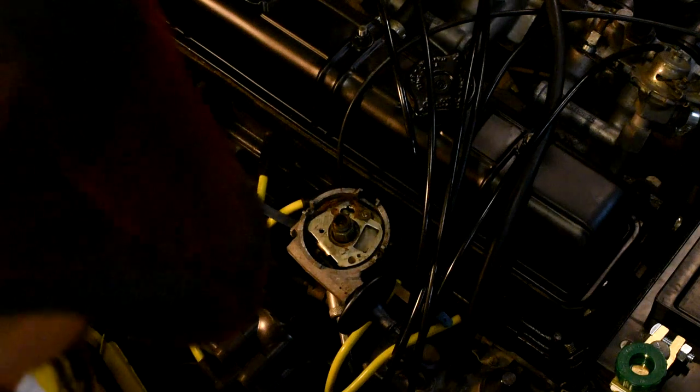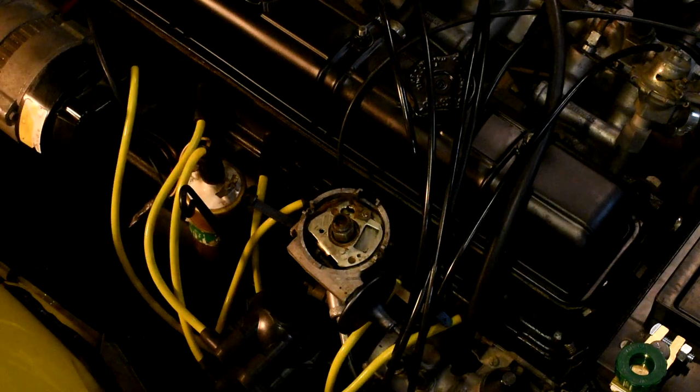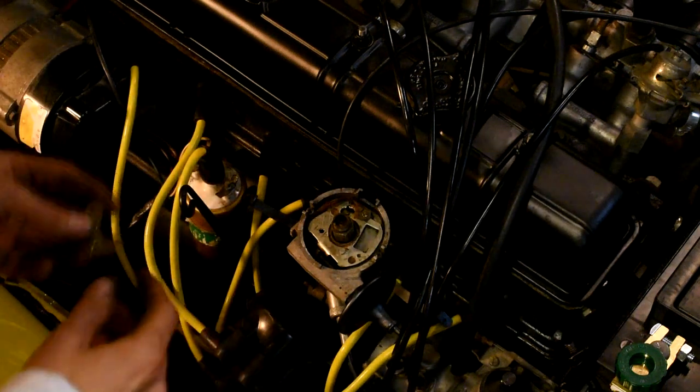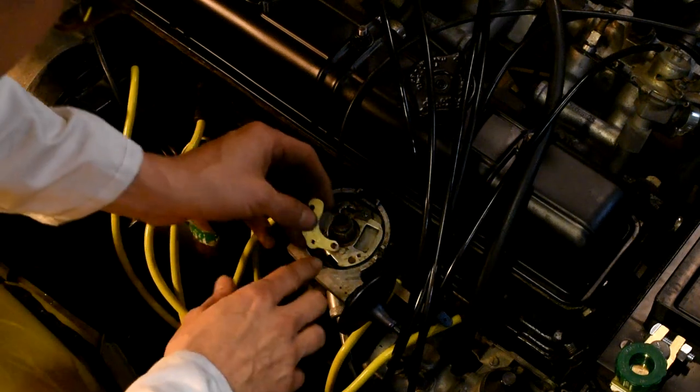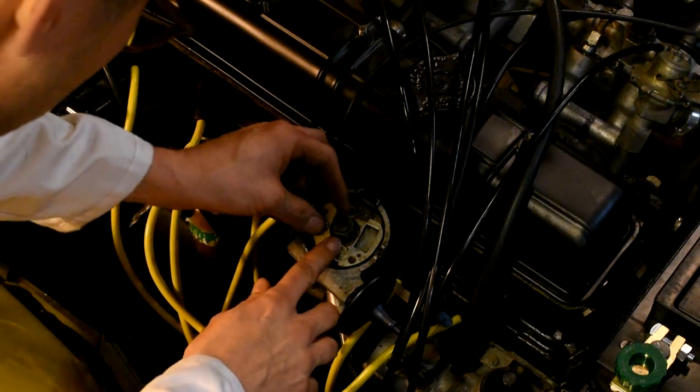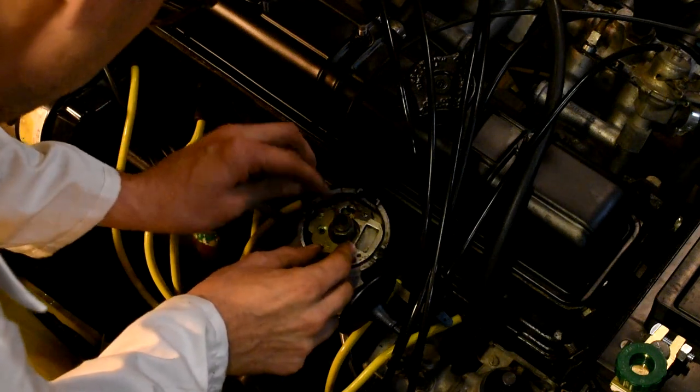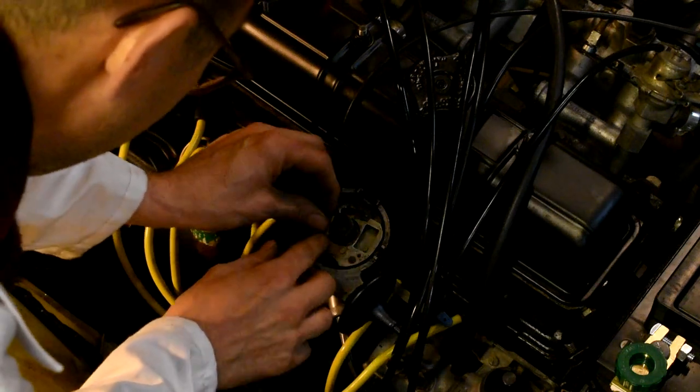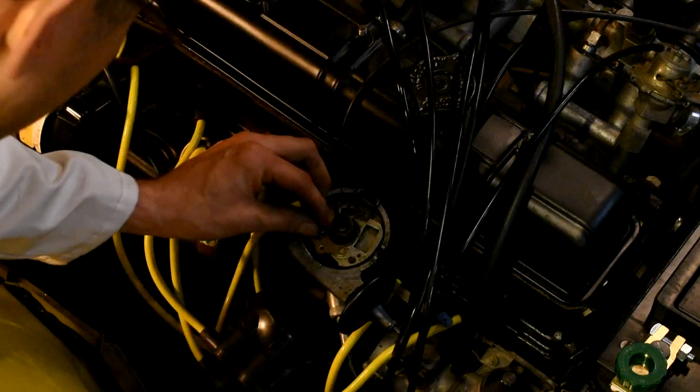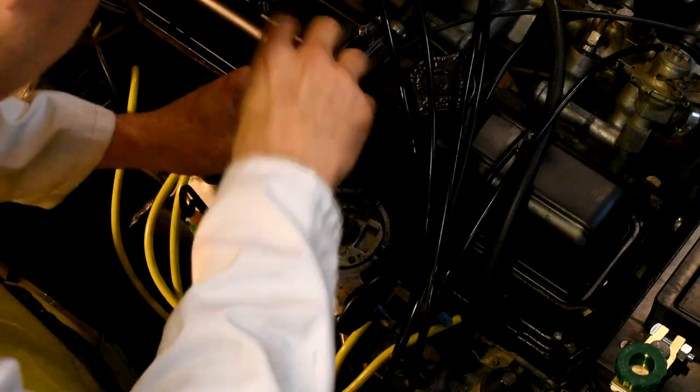So the next step is to install the Lumination Magnetronix system. What we've got with the Magnetronix is firstly this little base plate where the Magnetronix sits on, and that sits in place of where the points would ordinarily be. That's just screwed down here and just get that in nice and tight so it doesn't move around.